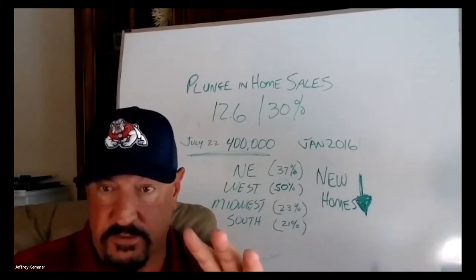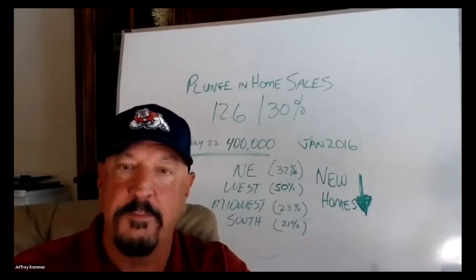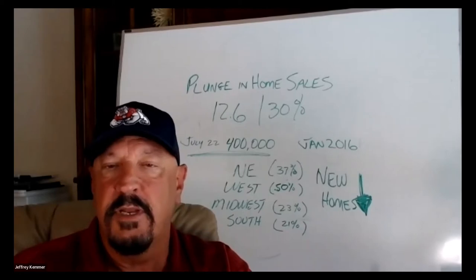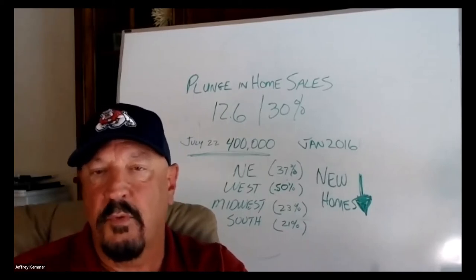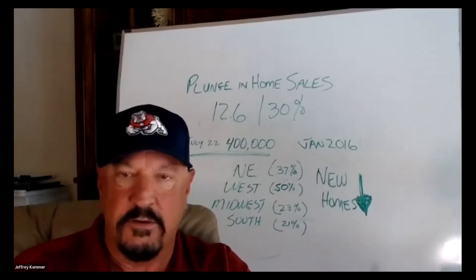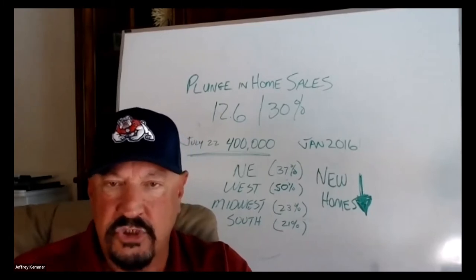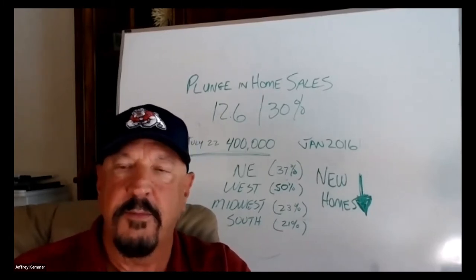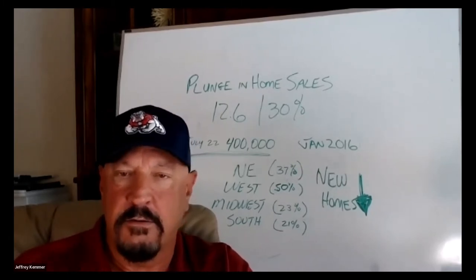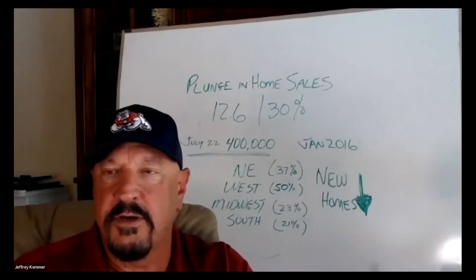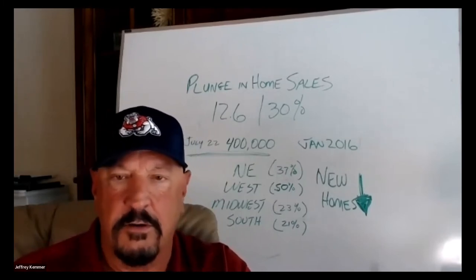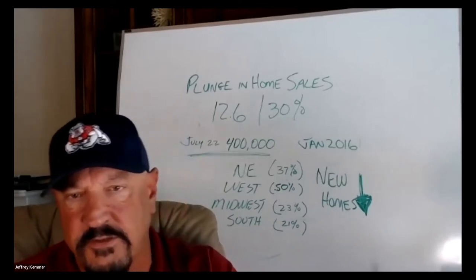There's been a plunge in home sales. That's the headline, the number one headline. During the month of July, we lost 12.6% of the sales compared to June, and June we lost 30% compared to May. So for that year, just those two months year to date, we've lost 50% of our headwind in terms of numbers of sales.